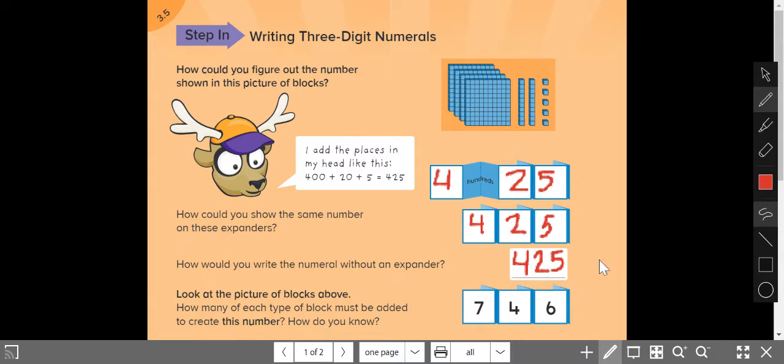Look at the picture of the blocks above. How many of each type of block must be added to create this number? Well, we have 400 already. This is 746. We have 400 in the 100s place already. So I know that 4 plus 3 equals 7, so I should add 3 more of the 100s blocks.